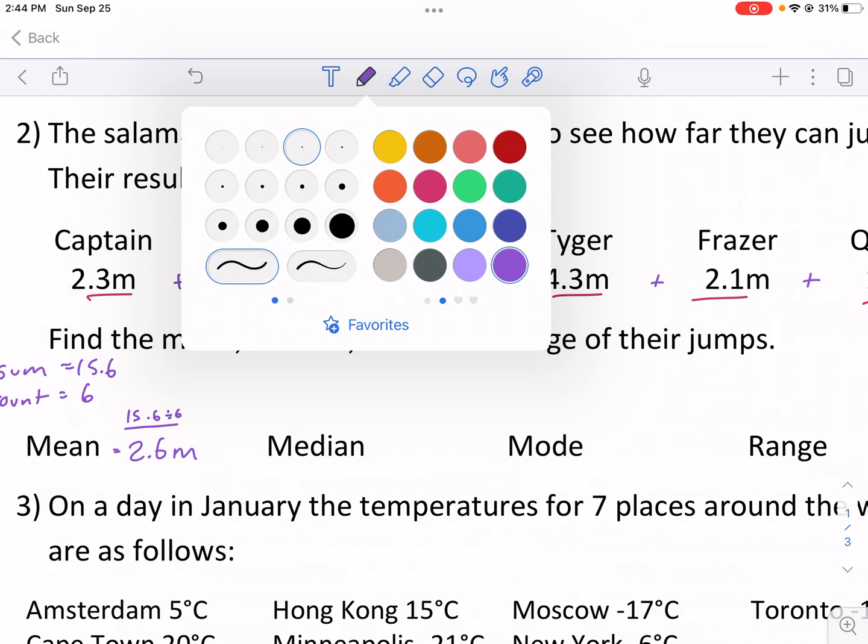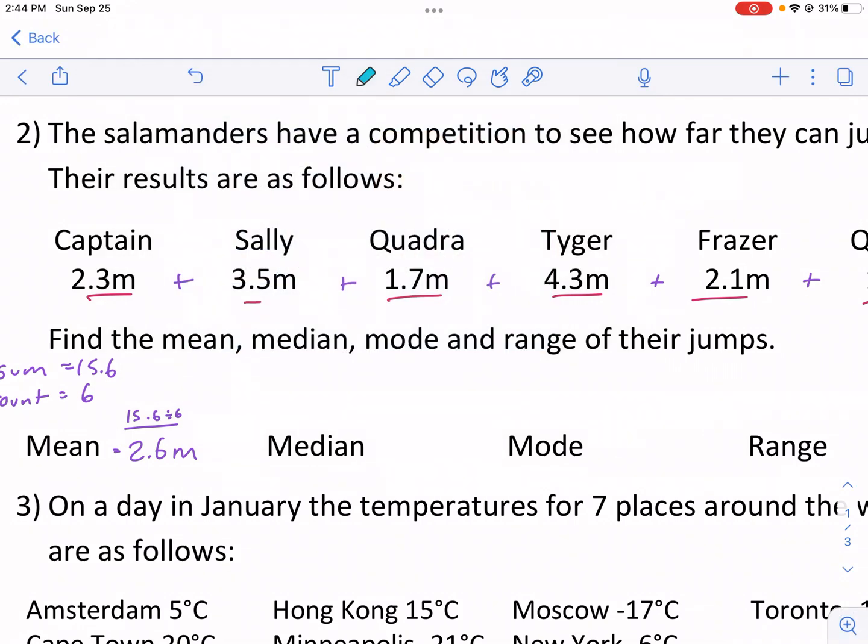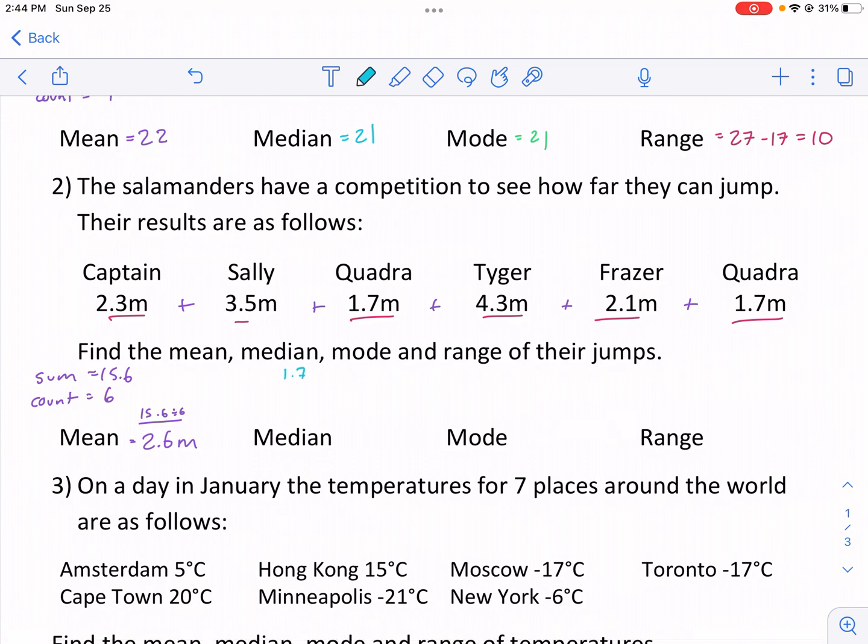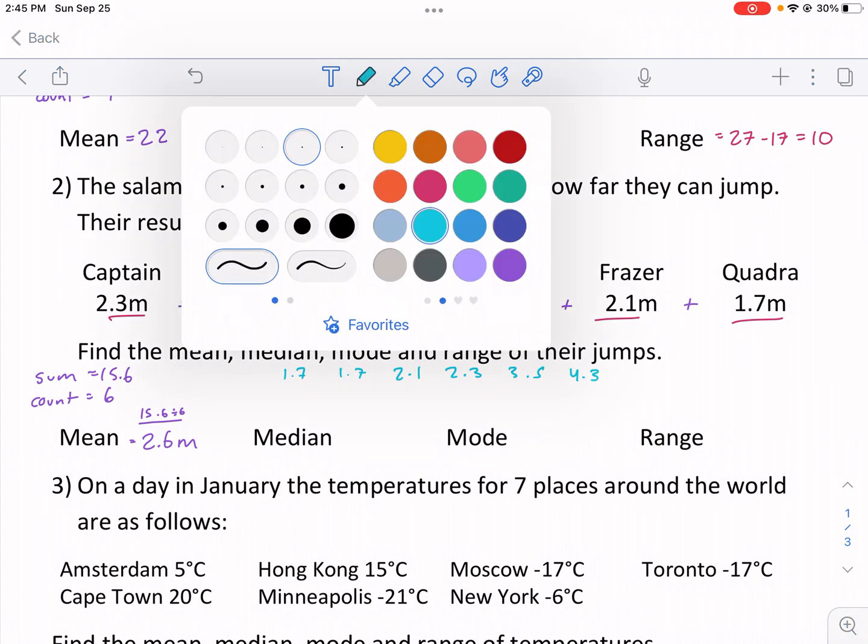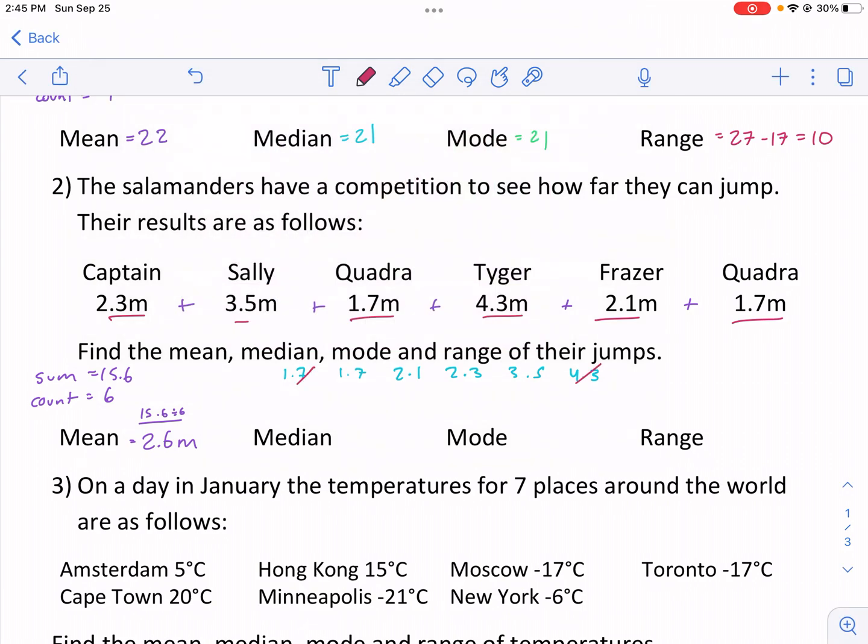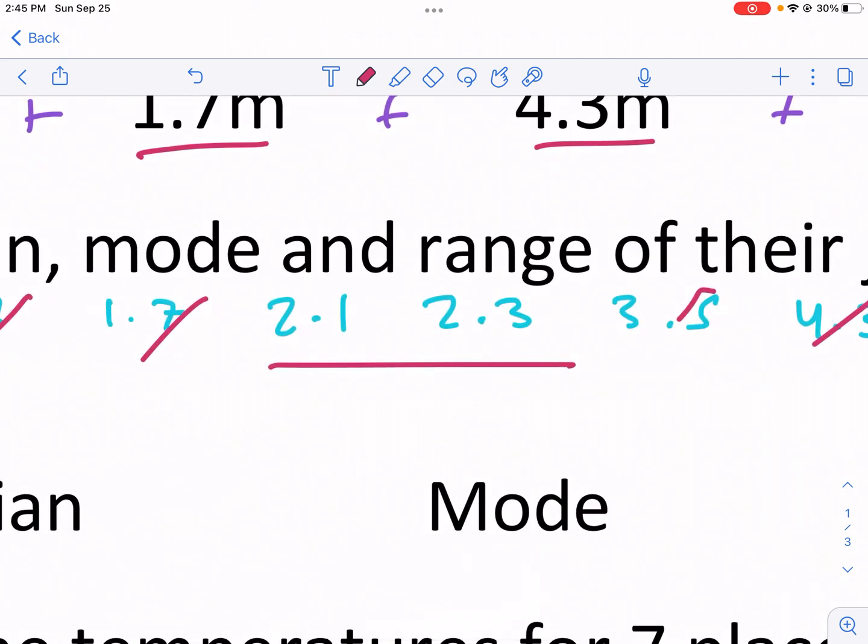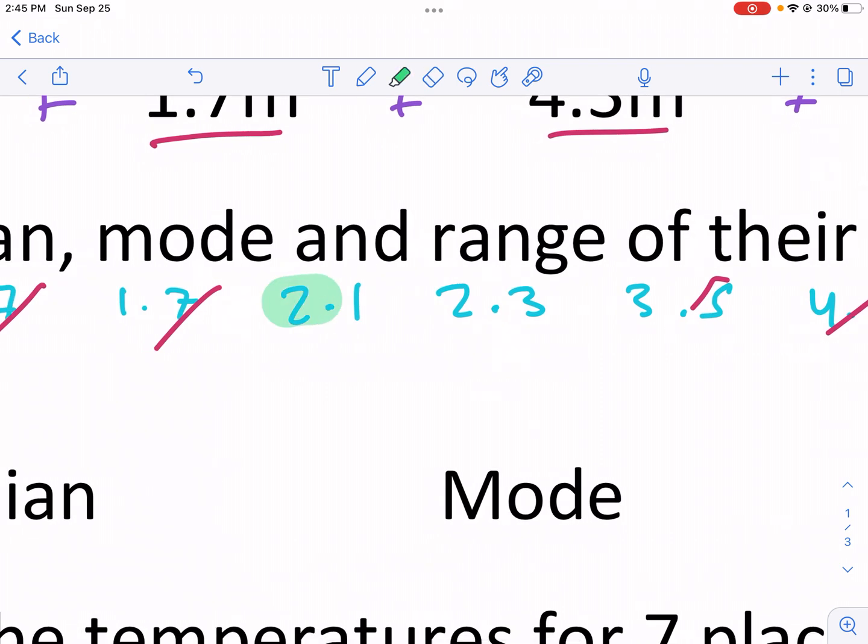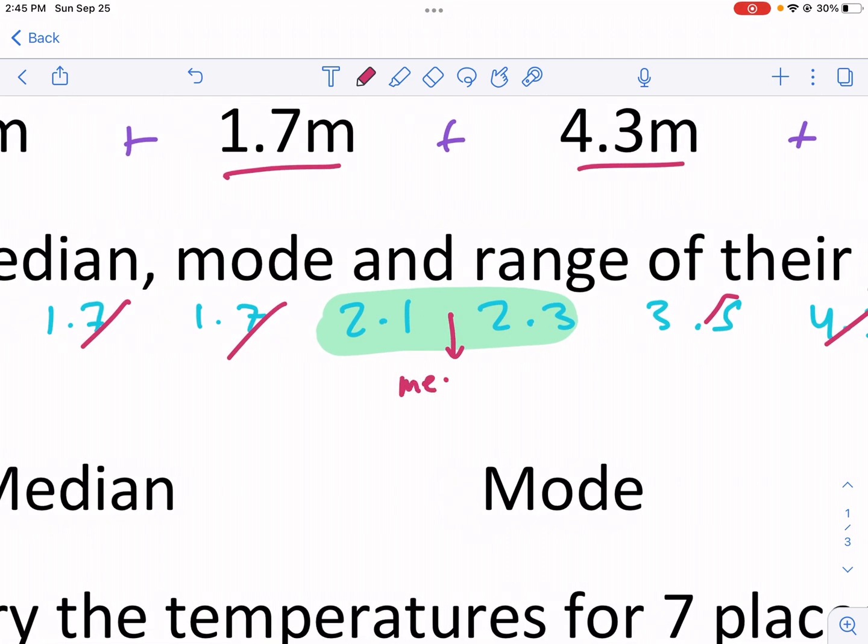My median, I need to put them in order. I have two 1.7s, then 2.1, 2.3, then 3.5, and then 4.3 is my last one. If you follow the process to go left to right, notice how I land on two. There's no middle between these. So what do you do in that situation?